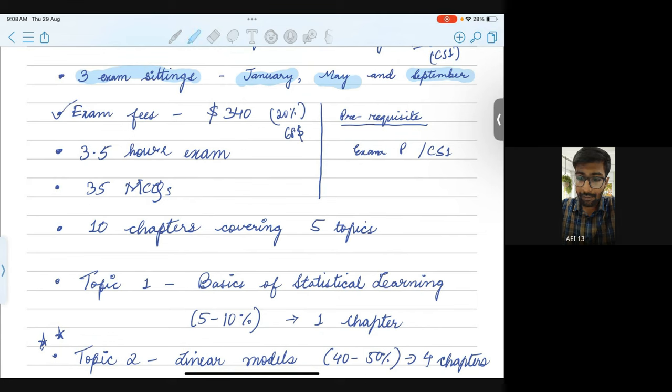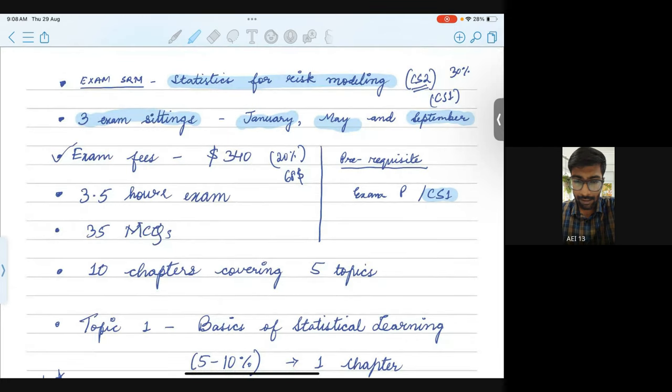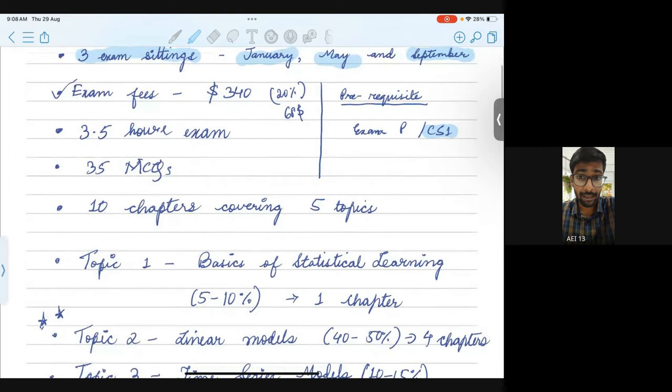Also, what is the prerequisite for this exam? If you are already a student of SOA, then exam P, that is the probability, the first exam which is similar to CS1, that would be a prerequisite. Or if you have already given exams from IFOA or IEI, then CS1 would be a prerequisite. If you have studied CS1, that would also give you an advantage in this exam because some parts of it are common with CS1, like the linear models part, the generalized linear models, etc.